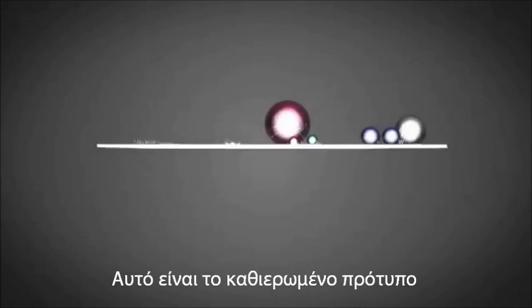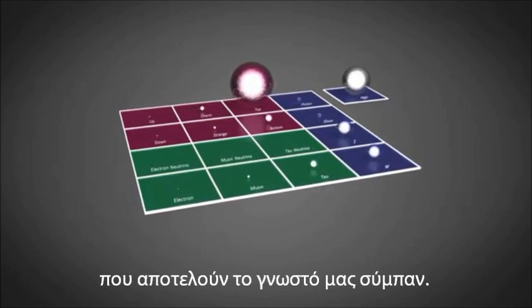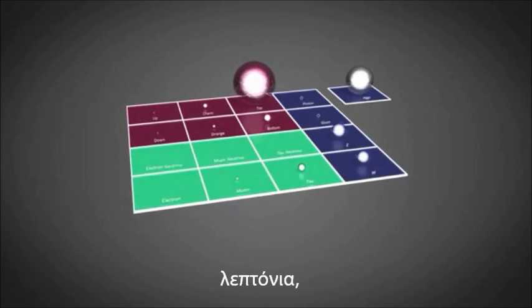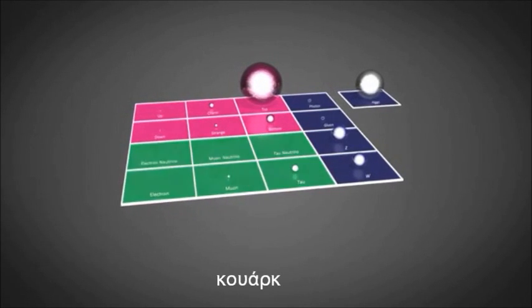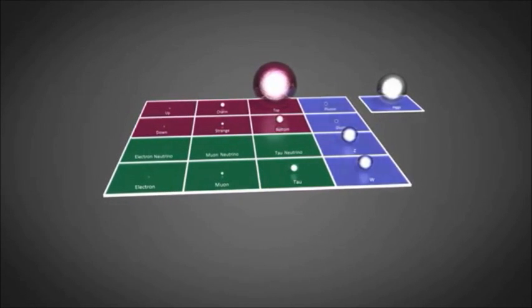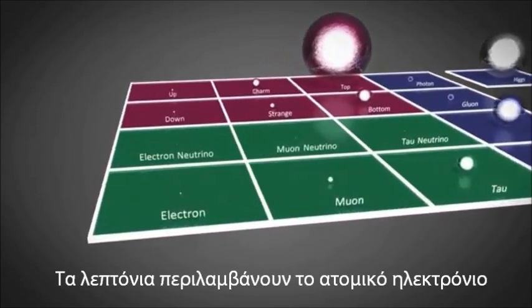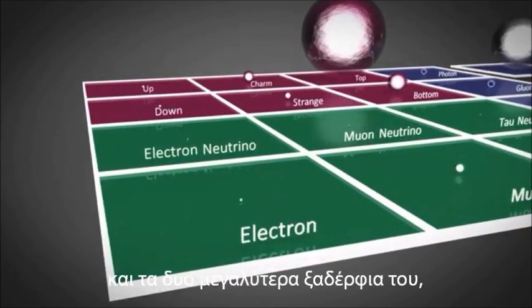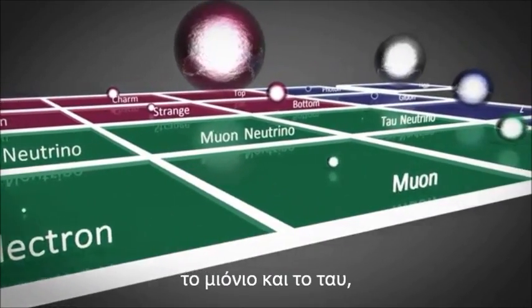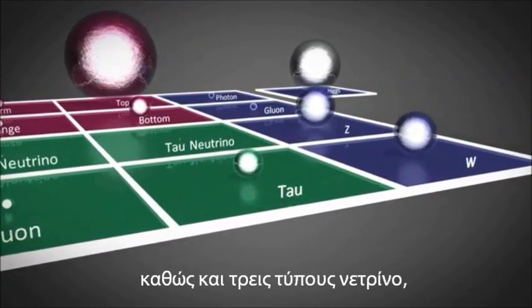This is the standard model of elementary particles that make up the known universe. They are divided into groups called the leptons, the quarks, and the gauge bosons. The leptons consist of the atomic electron and its two larger cousins, the muon and the tau, as well as three types of neutrino.